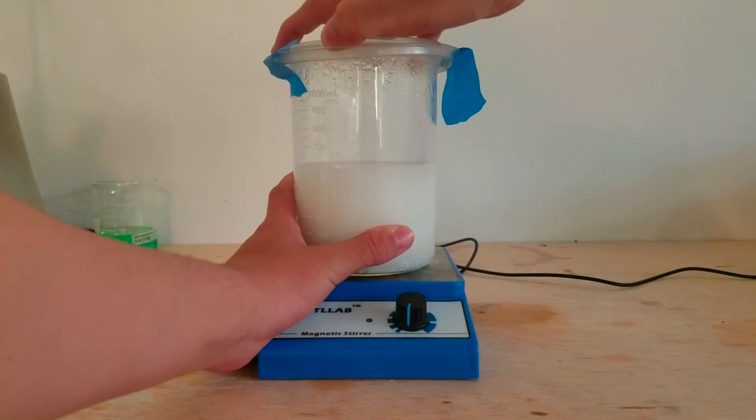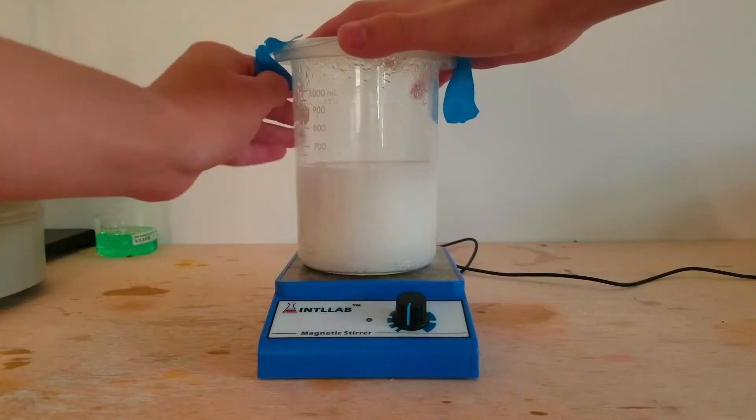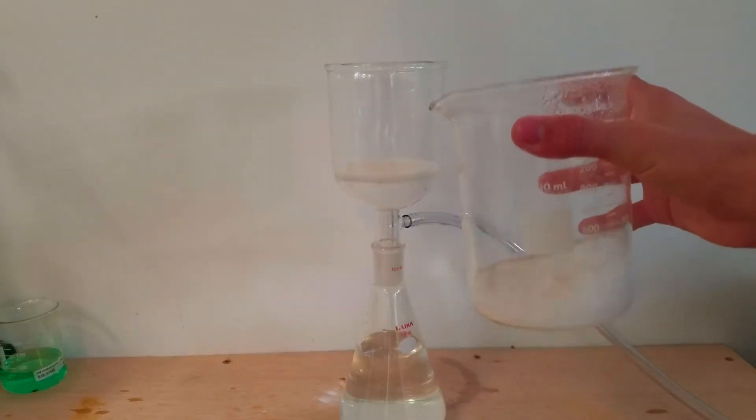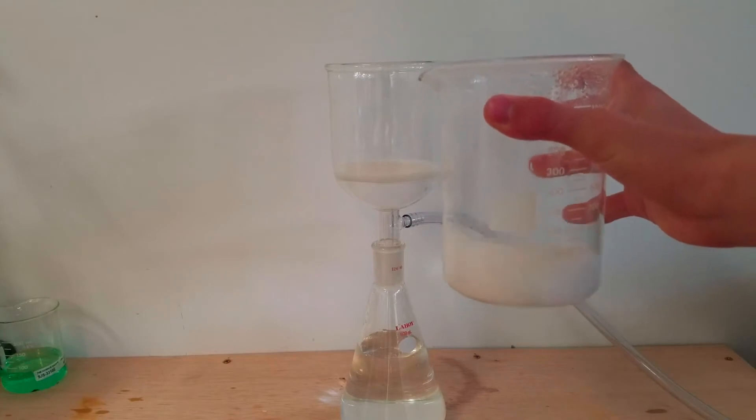I decided that the next step would be to try to filter off the bismuth oxychloride and dry it. Unfortunately, I had too much mixture to filter it off in one go, so I had to do two vacuum filtrations.